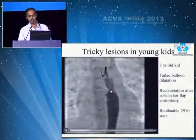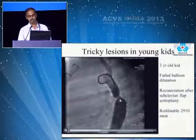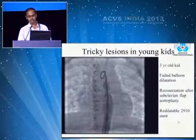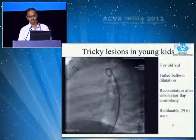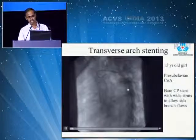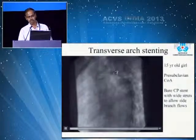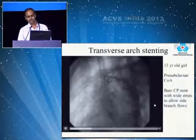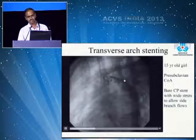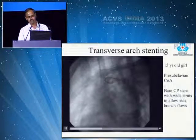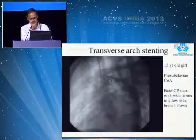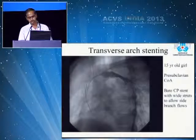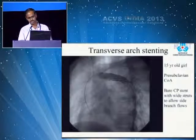This is a three-year-old child who failed to get a good result with balloon dilatation, in which case we have to resort to stenting. You can see that it is a 2910 stent, which can be dilated up to 18 mm when the child grows bigger. This is a transverse arch stenting — note the pre-subclavian transverse arch coarctation with subclavian artery narrowing also. Here there is no role for a covered stent; we go for bare stenting. A bare CP stent is deployed, resulting in completely wide-open flow with no gradients.